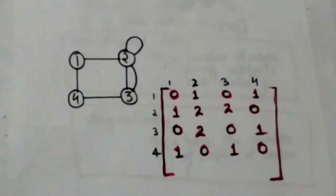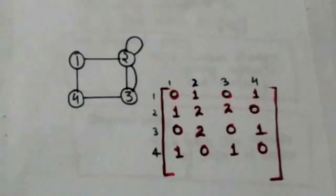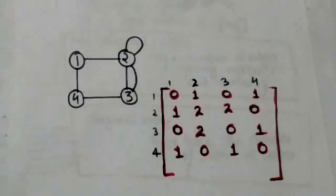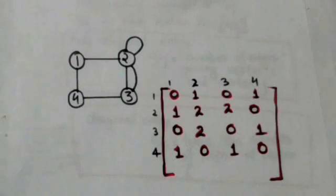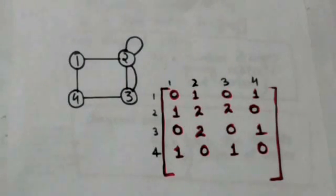There is an edge joining vertex one and vertex two, therefore the entry at the first row and second column is one, and the entry at the second row and first column is also one. There are two edges joining vertex two and vertex three, therefore the entry at the second row and third column is two, and similarly the entry at the third row and second column is also two.